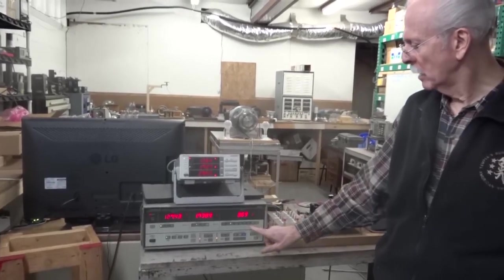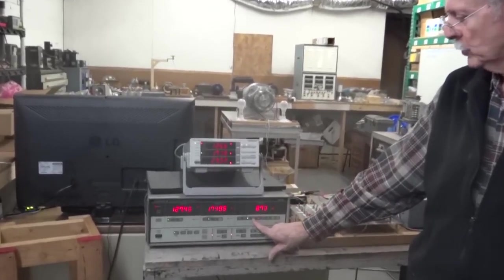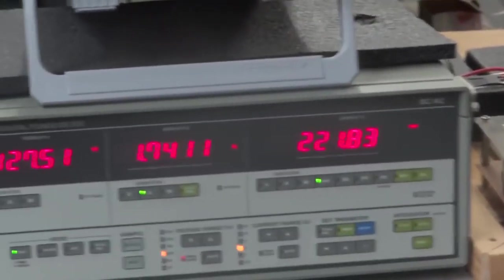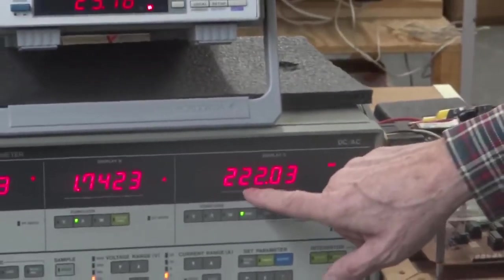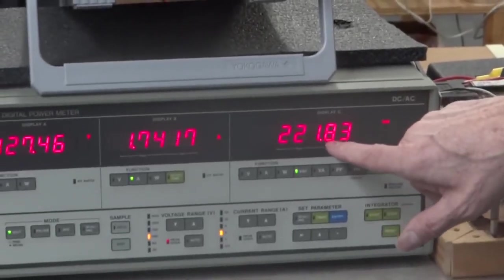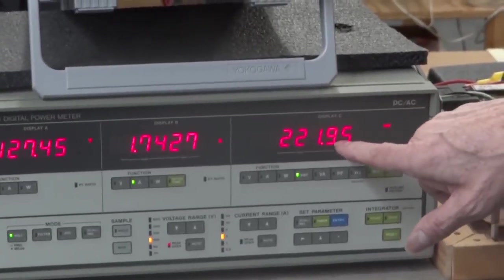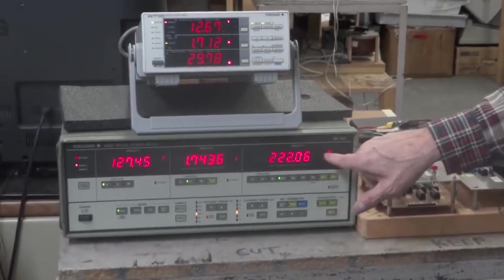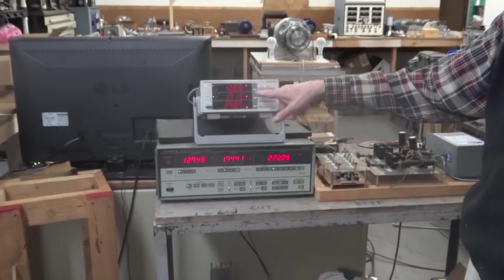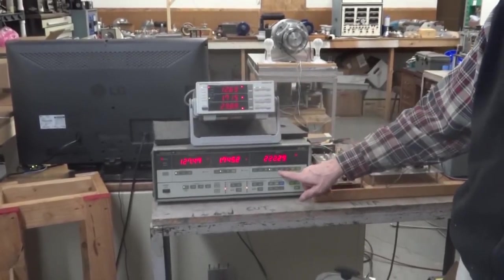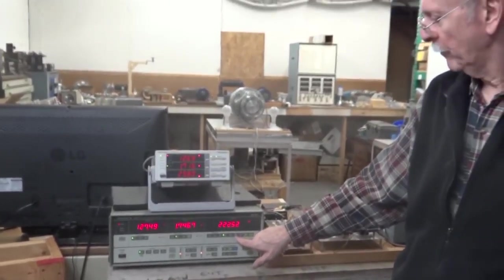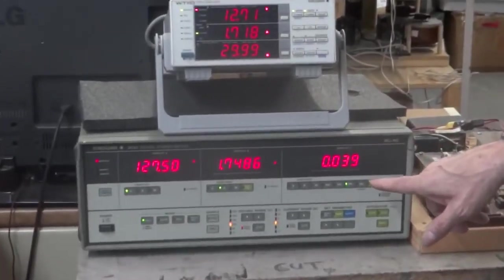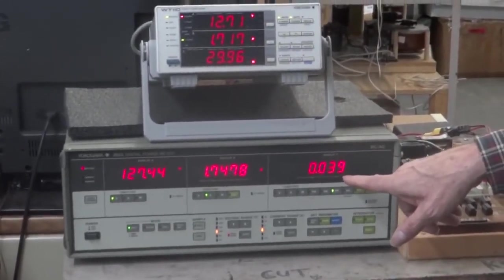Now you might say, well, is there any proof of that? Yes, there is. If we switch to VARs, you'll notice that even though we're running a totally resistive load, I have 222 VARs, which is totally reactive power, okay? And that's the reason that you have a VAR reading. The VAR reading up here would be zero. Now if we move to power factor, the power factor is only 0.039, which is also indicative of a highly reactive load.